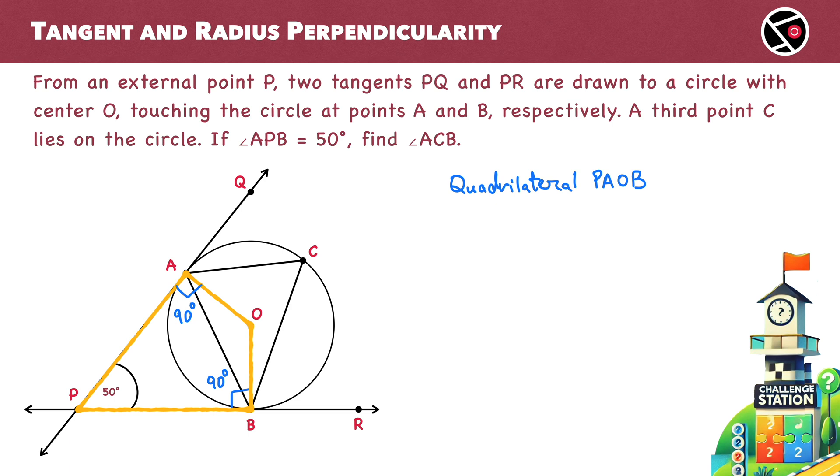So 50 degrees plus 90 degrees plus angle AOB plus 90 degrees equals 360 degrees. 50 plus 90 is 140 and 140 plus 90 is 230. So we have angle AOB equals 130 degrees.